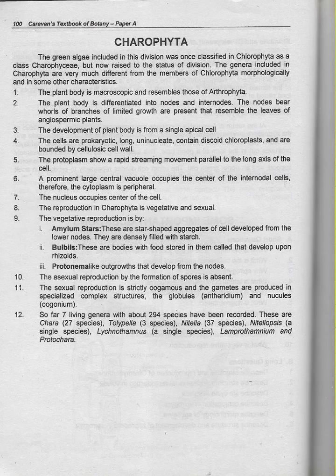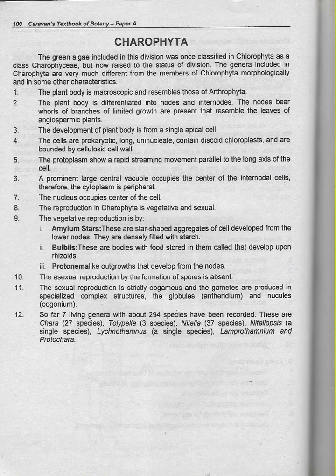Number 4: The cells are eukaryotic, long, uninucleate, contain discoid chloroplasts, and are bounded by a cellulosic cell wall. Number 5: The protoplasm shows rapid streaming movement parallel to the long axis of the cell. Number 6: A prominent large central vacuole occupies the center of the internodal cells, therefore the cytoplasm is peripheral.